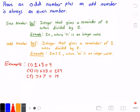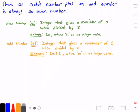Let's go ahead and try to prove this statement true, that an odd number plus an odd number is always an even number. We're going to take one odd number, 2 times m plus 1, and we're going to add it to another odd number.